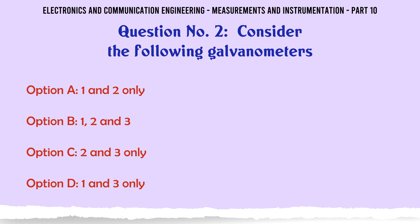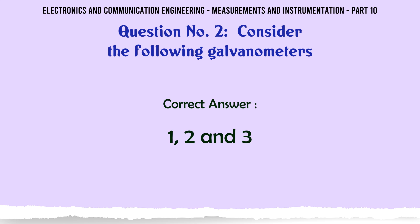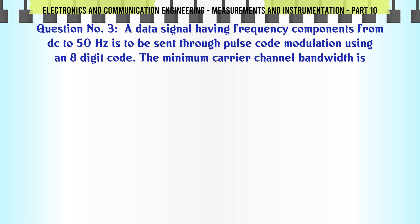A data signal having frequency components from DC to 50 Hz is to be sent through pulse code modulation using an 8-digit code. The minimum carrier channel bandwidth is: A) 1 kHz, B) 2 kHz, C) 4 kHz, D) 8 kHz. The correct answer is 4 kHz.